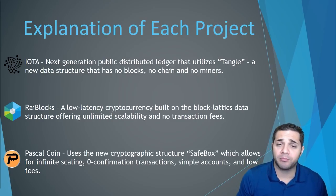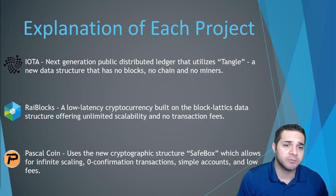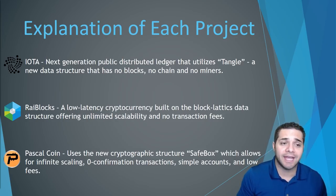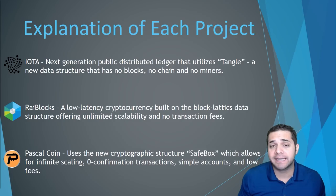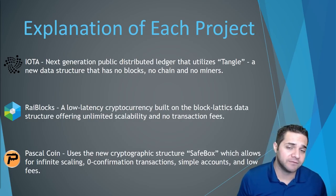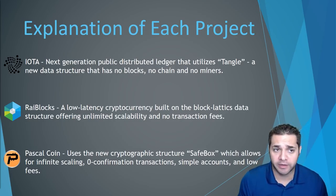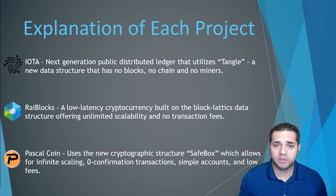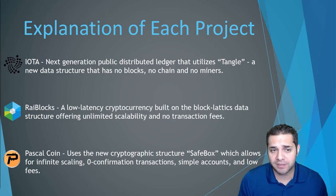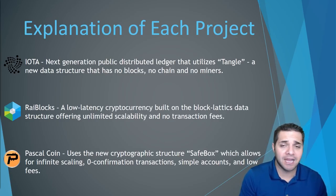Let's start with a brief explanation of each project. IOTA is a next-generation public distributed ledger that utilizes Tangle, which is a new data structure that has no blocks, no chains, and no miners. Next, RailBlocks is a low-latency cryptocurrency built on the block lattice data structure, offering unlimited scalability and no transaction fees. Finally, PascalCoin uses a new cryptographic structure called SafeBox, which allows for infinite scaling, zero confirmation transactions, simple accounts, and low fees.